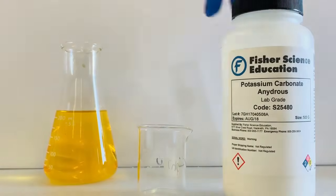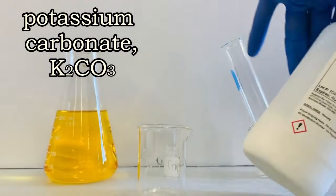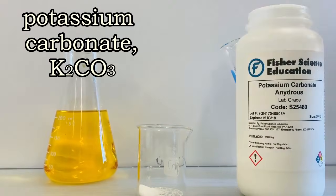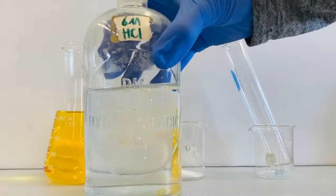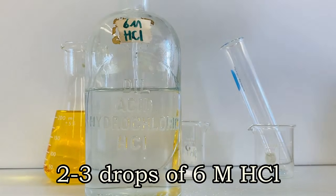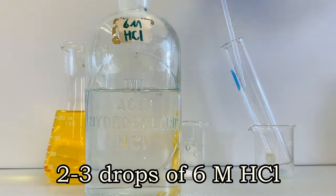A white solid called potassium carbonate is added to the beaker. Potassium carbonate is a basic salt. Finally, two to three drops of six molar hydrochloric acid are added to the test tube.